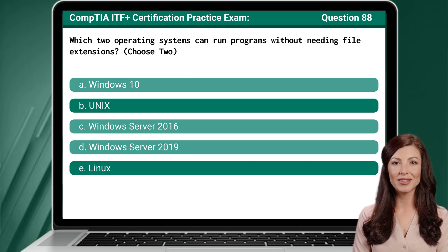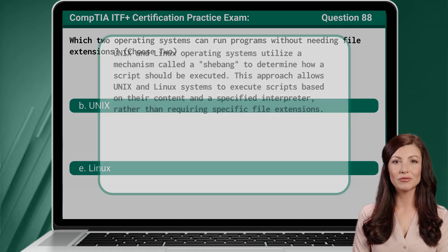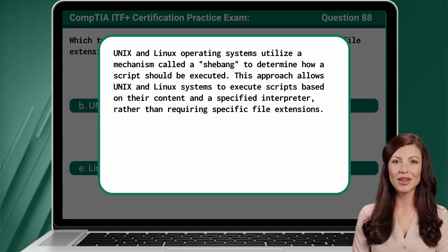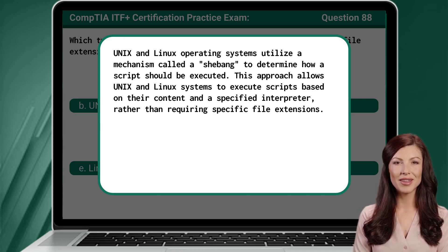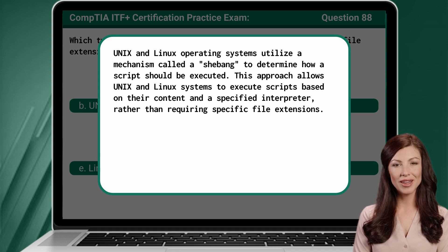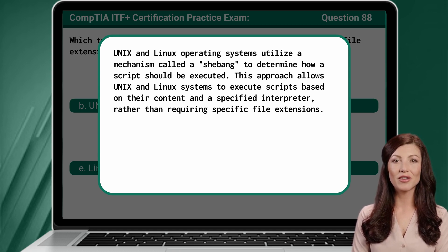The answer is B and E. Unix and Linux. Unix and Linux operating systems utilize a mechanism called a shebang to determine how a script should be executed. This approach allows Unix and Linux systems to execute scripts based on their content and a specified interpreter, rather than requiring specific file extensions.